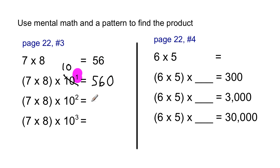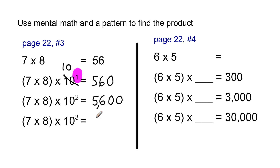Extending the pattern: seven times eight is fifty-six. For ten to the third power, that's three powers of ten — three zeros — so seven times eight times ten to the third power is fifty-six thousand.